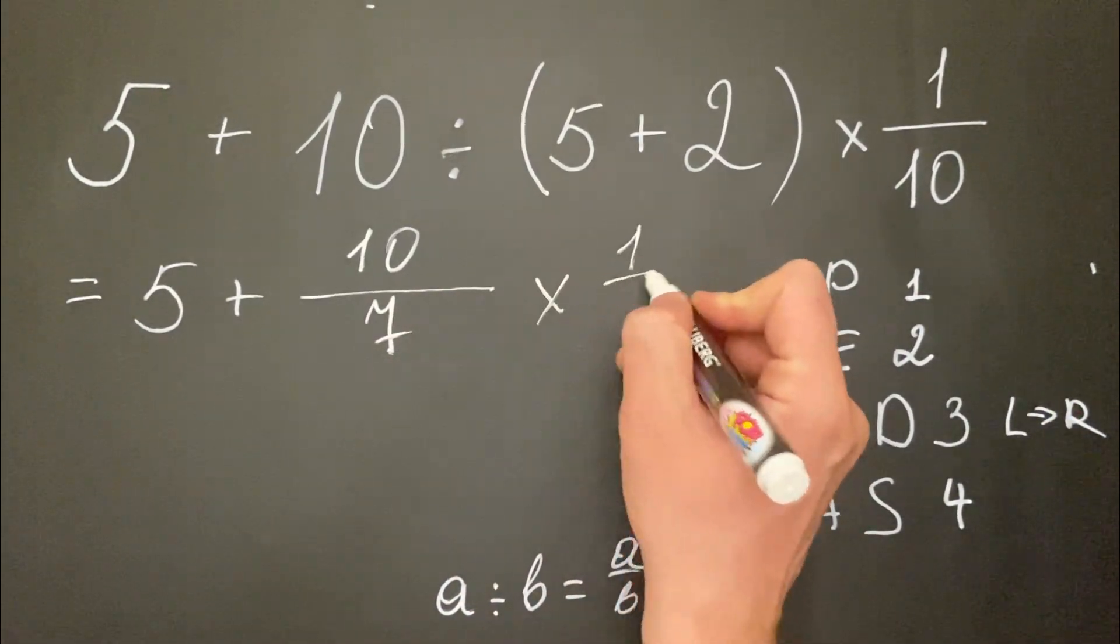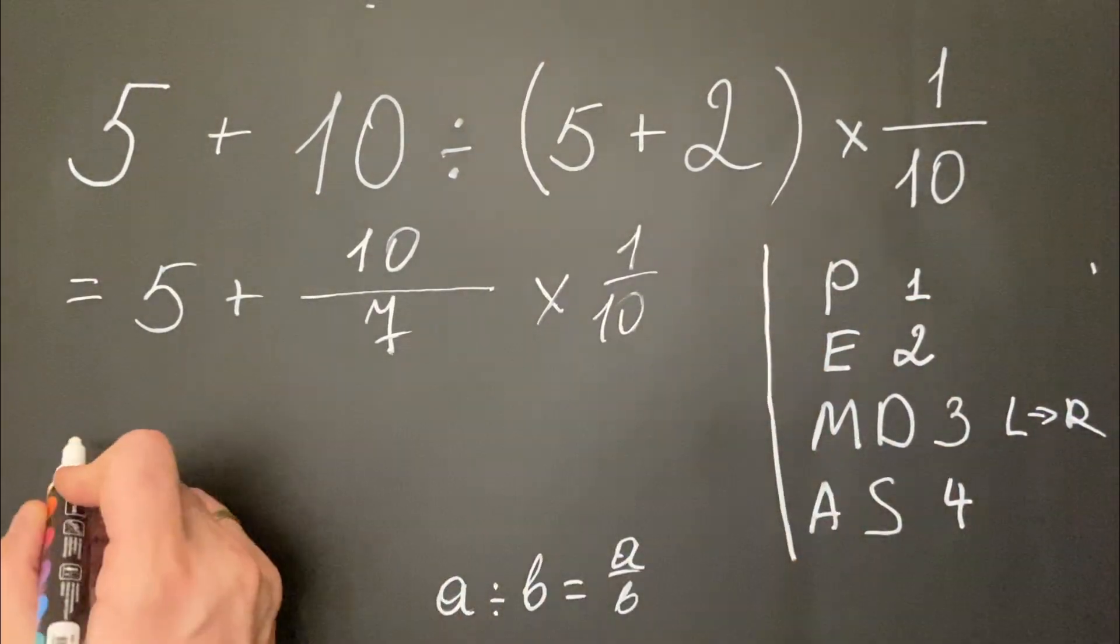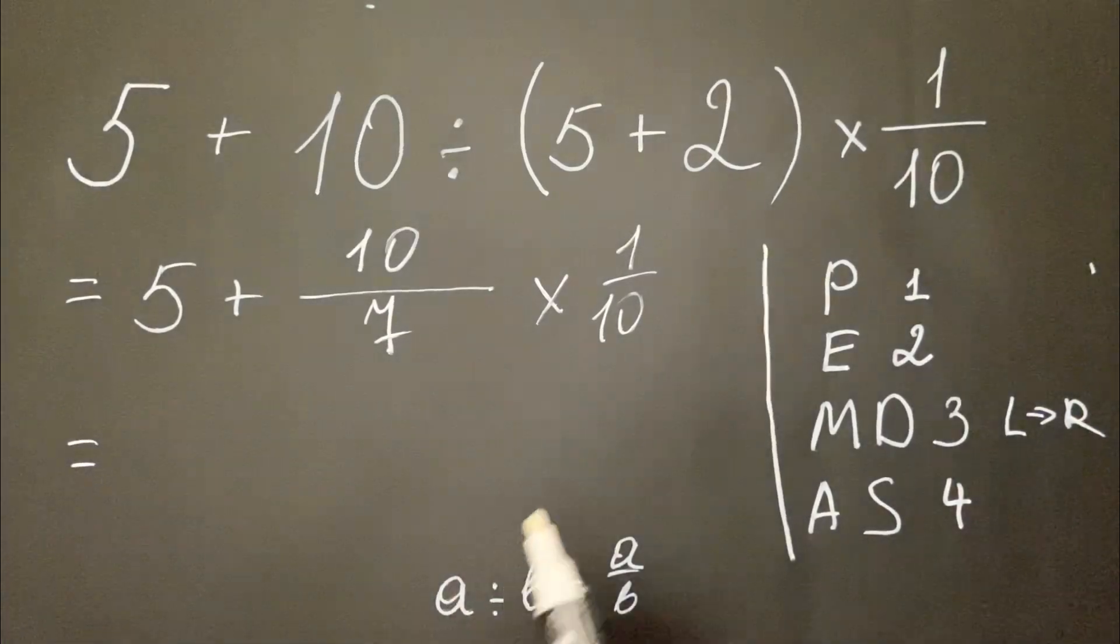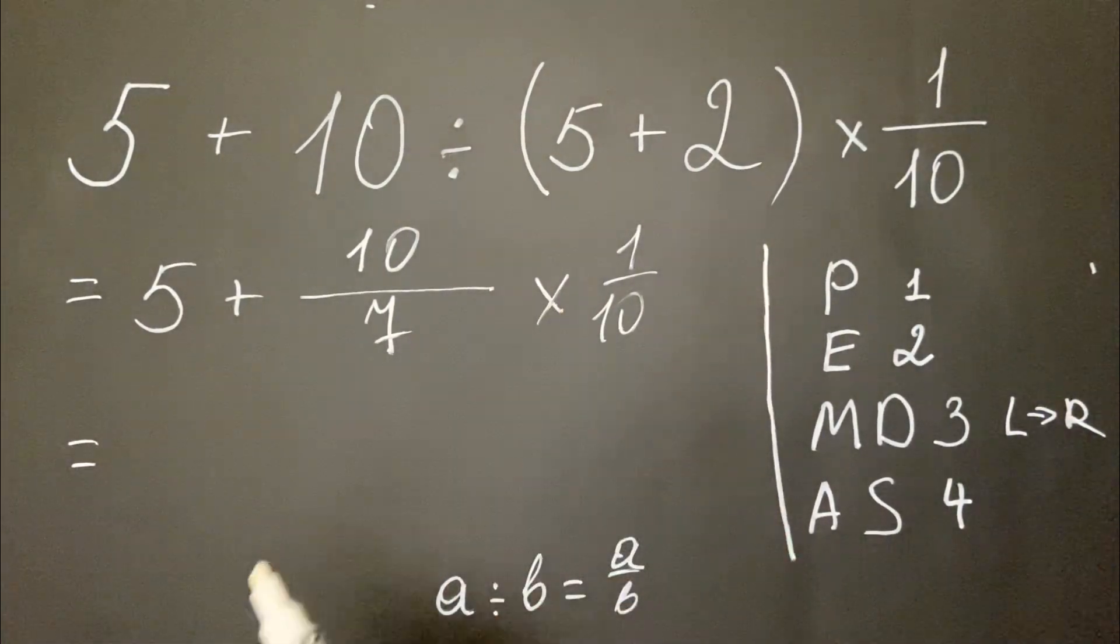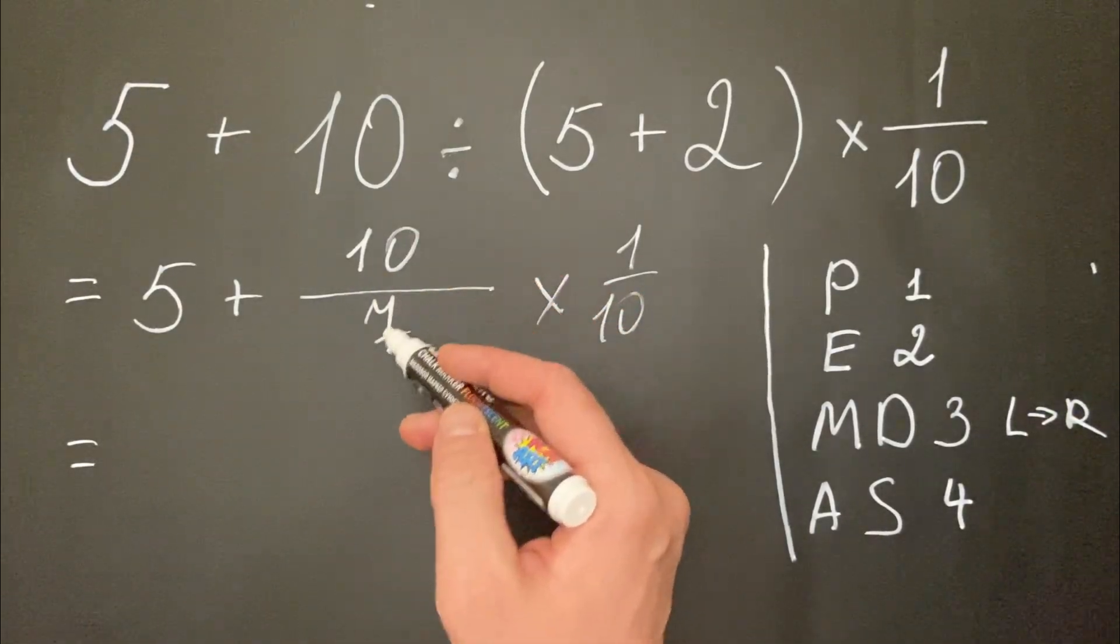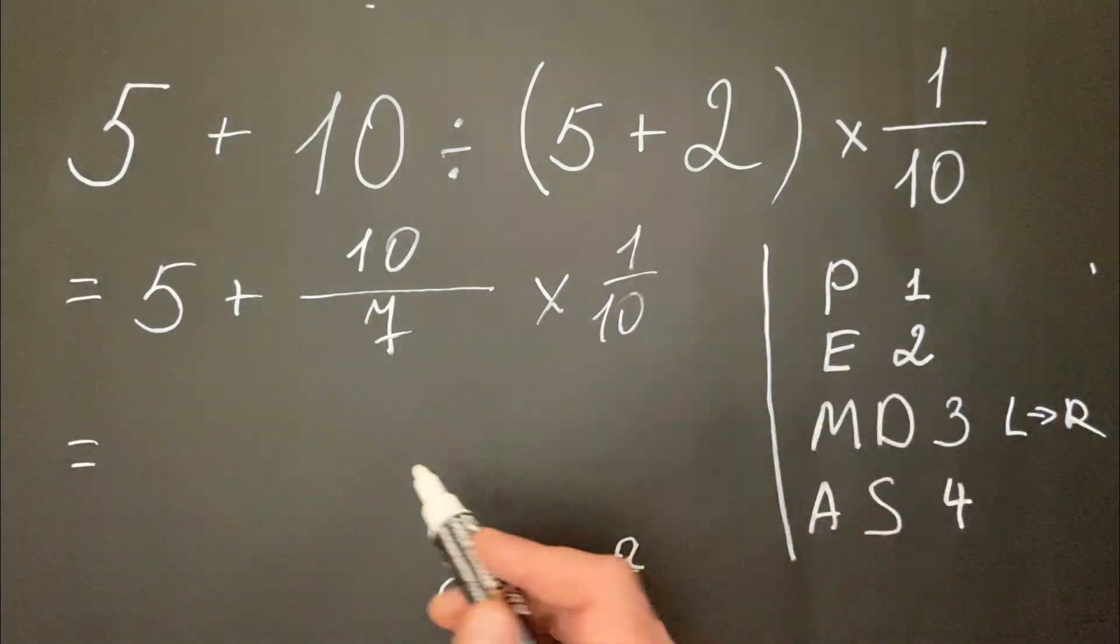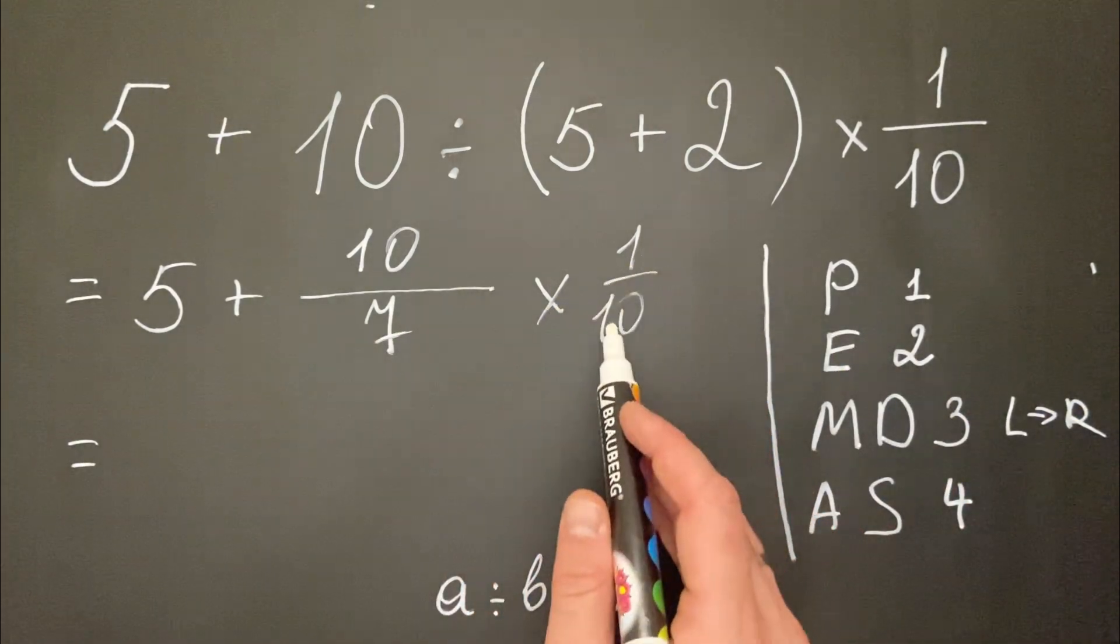Let's put it like this so we don't forget. Now, we must do the multiplication. We leave 10 divided by 7 as it is because it's not a fixed number. But by having it multiplied by 10, we can simplify.